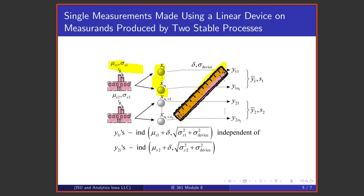So here's process number one with mean one standard deviation one that produces measurands one through n one that are seen through measurement device with bias delta constant bias delta and a sigma or a variability of measurement sigma sub device to produce data set number one. A second process has a second mean and a second standard deviation producing a second set of measurands that are seen through measurement noise producing data set number two. These two data sets might be processed into sample statistics y bar and s y bar and s for the two samples.